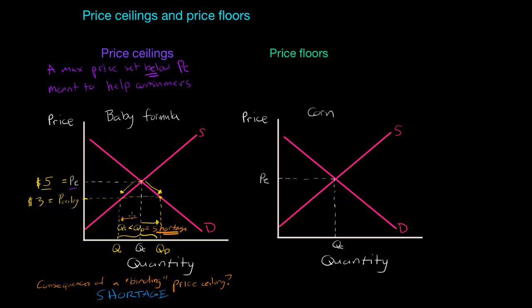The intention of the price ceiling was to help consumers who were having a hard time affording baby formula. However, the outcome is that only some consumers — those from zero to QS who are able to buy the available units — are helped. So some people are made better off. However, there is a shortage, and all consumers who can't find baby formula are hurt. All producers are also going to be worse off because there is a lower price and therefore less profit to be earned in the production of baby formula.